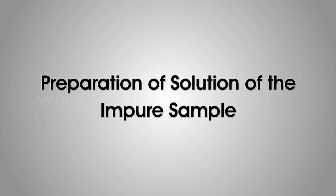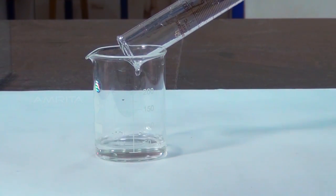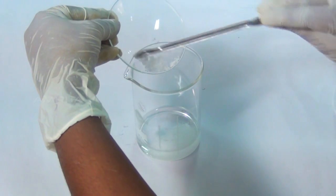Procedure: Preparation of solution of the impure sample. Take about 30 ml of distilled water in a beaker. To this, add about 6 g of the crude sample of Potash Alum using the spatula.